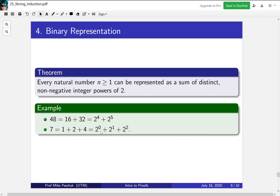7 we can write as 2 to the 0 plus 2 to the 1 plus 2 to the 2. Again, all of the exponents are different and they're all non-negative, so they're 0 or larger, and they're integer powers.